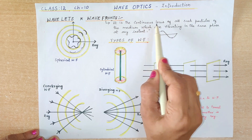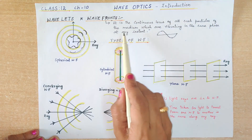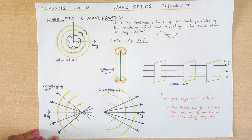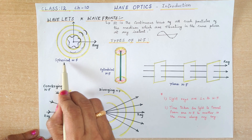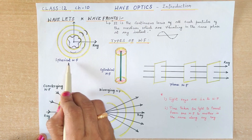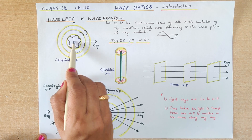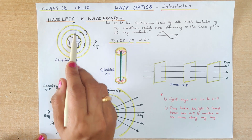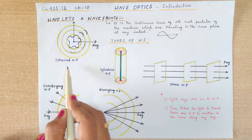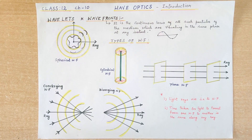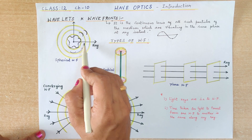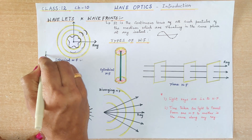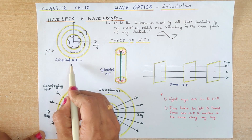These envelopes that cover the wavelets are said to be wavefronts. A wavefront is the continuous locus — the location of all particles of the medium which are vibrating in the same phase at any instant. There are different types of wavefronts. The first one is a spherical wavefront, which applies to a point source. The light travels and spreads in all directions from the point source, so the envelope enclosing all the wavelets takes a spherical shape. For a point source, the wavefront will be spherical.